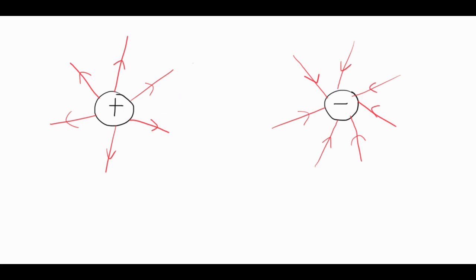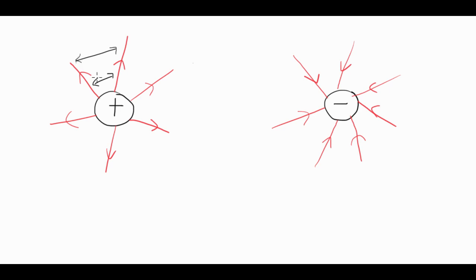A couple of important ideas here that you've got to be aware of. Number one, the closer the field lines are together the stronger the electric field strength. So the field will be stronger at a point closer to the charge, where the field lines are closer together.